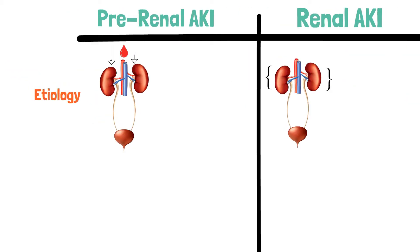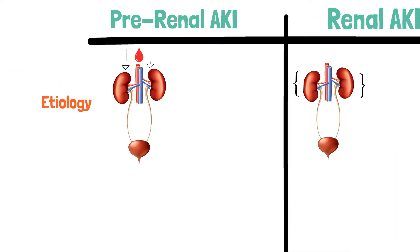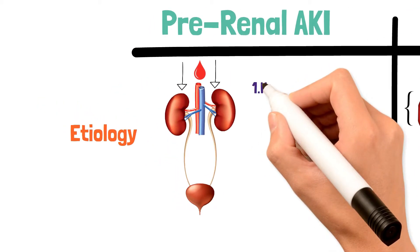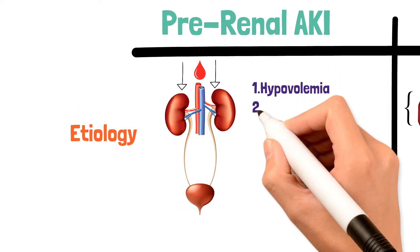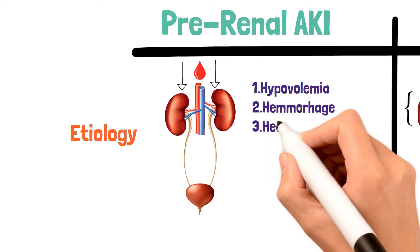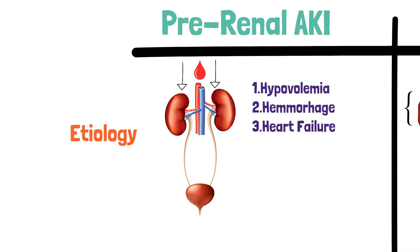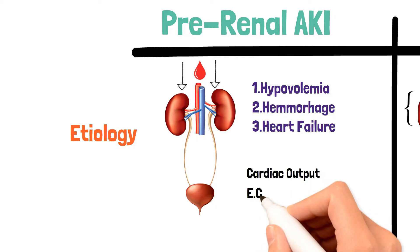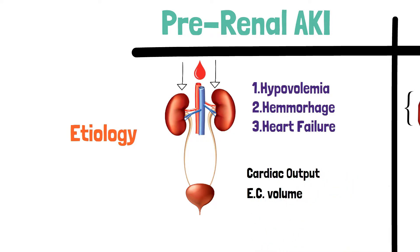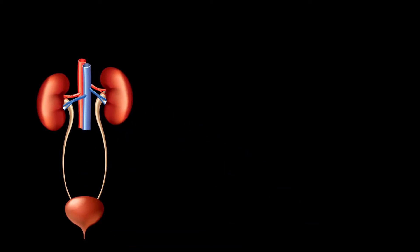Pre-renal AKI is when there is not enough blood reaching the kidneys — for example, in hypovolemia, which means low blood volume, and in hemorrhage when there's loss of blood and not enough left for kidney perfusion. Also in heart failure, when there's a low cardiac output, less blood is pumped out of the heart, so there is less blood being circulated, and therefore the kidney will be hypoperfused. When cardiac output decreases and the effective circulating volume of blood decreases, it is a cause for pre-renal AKI.